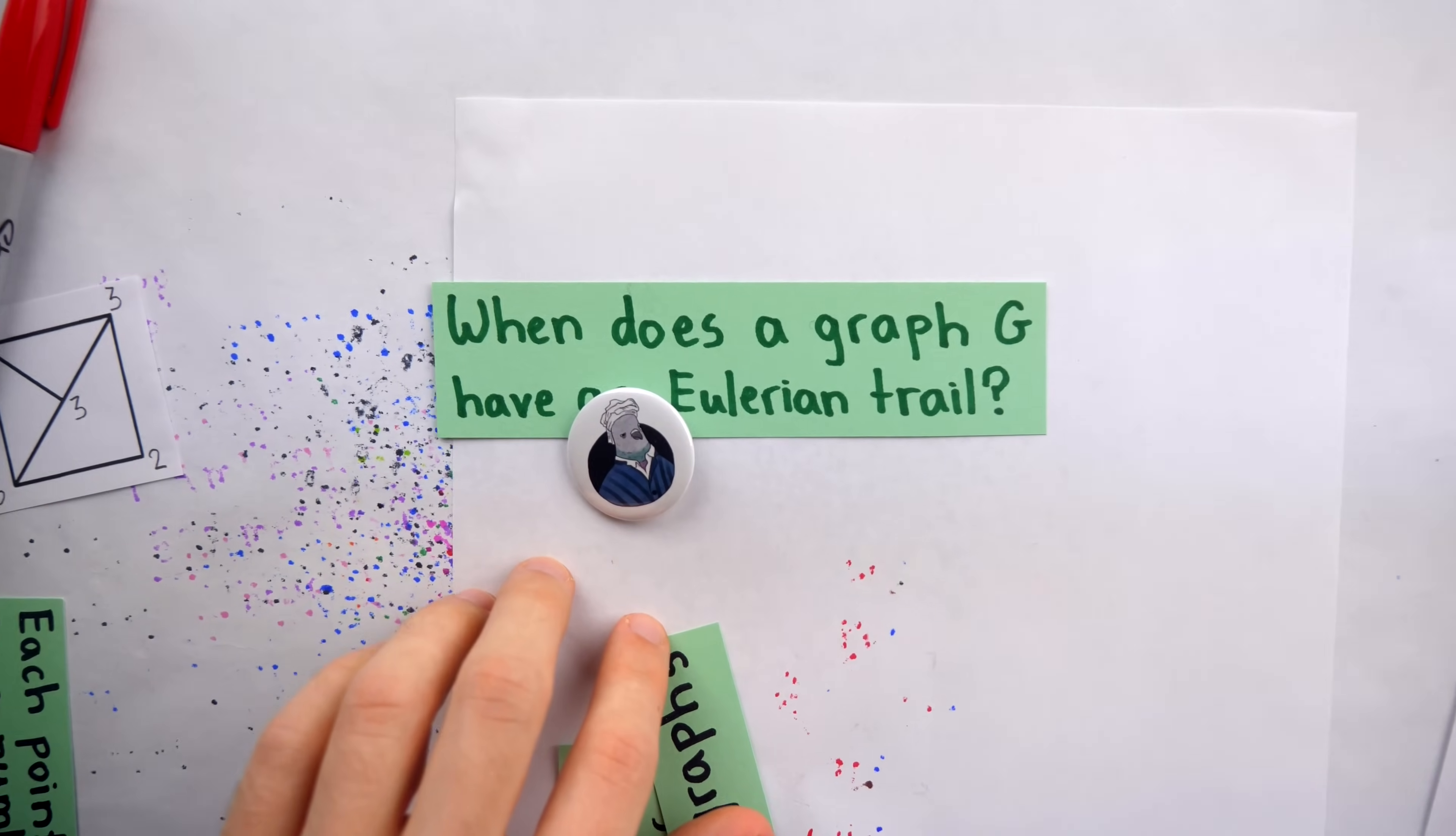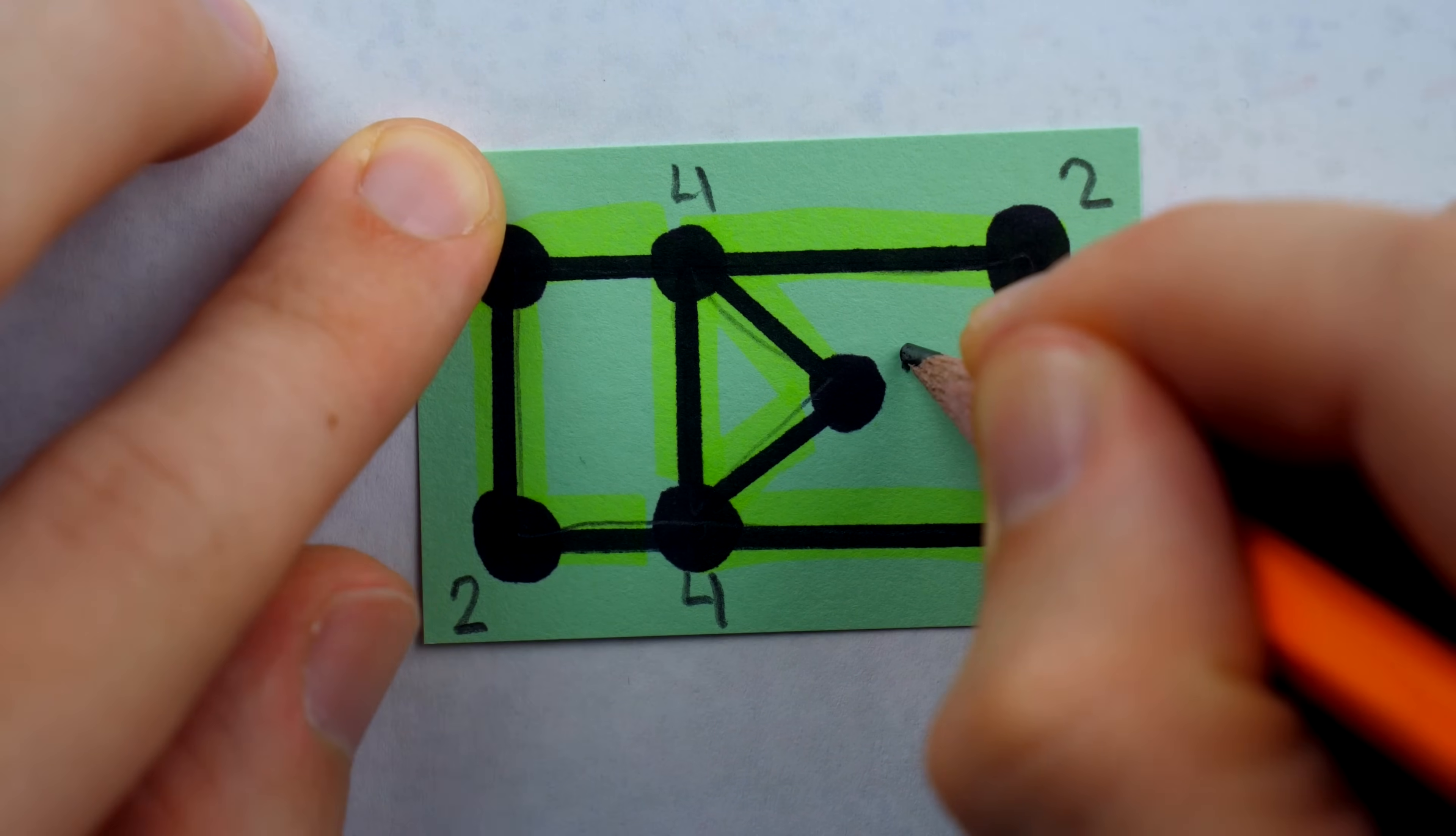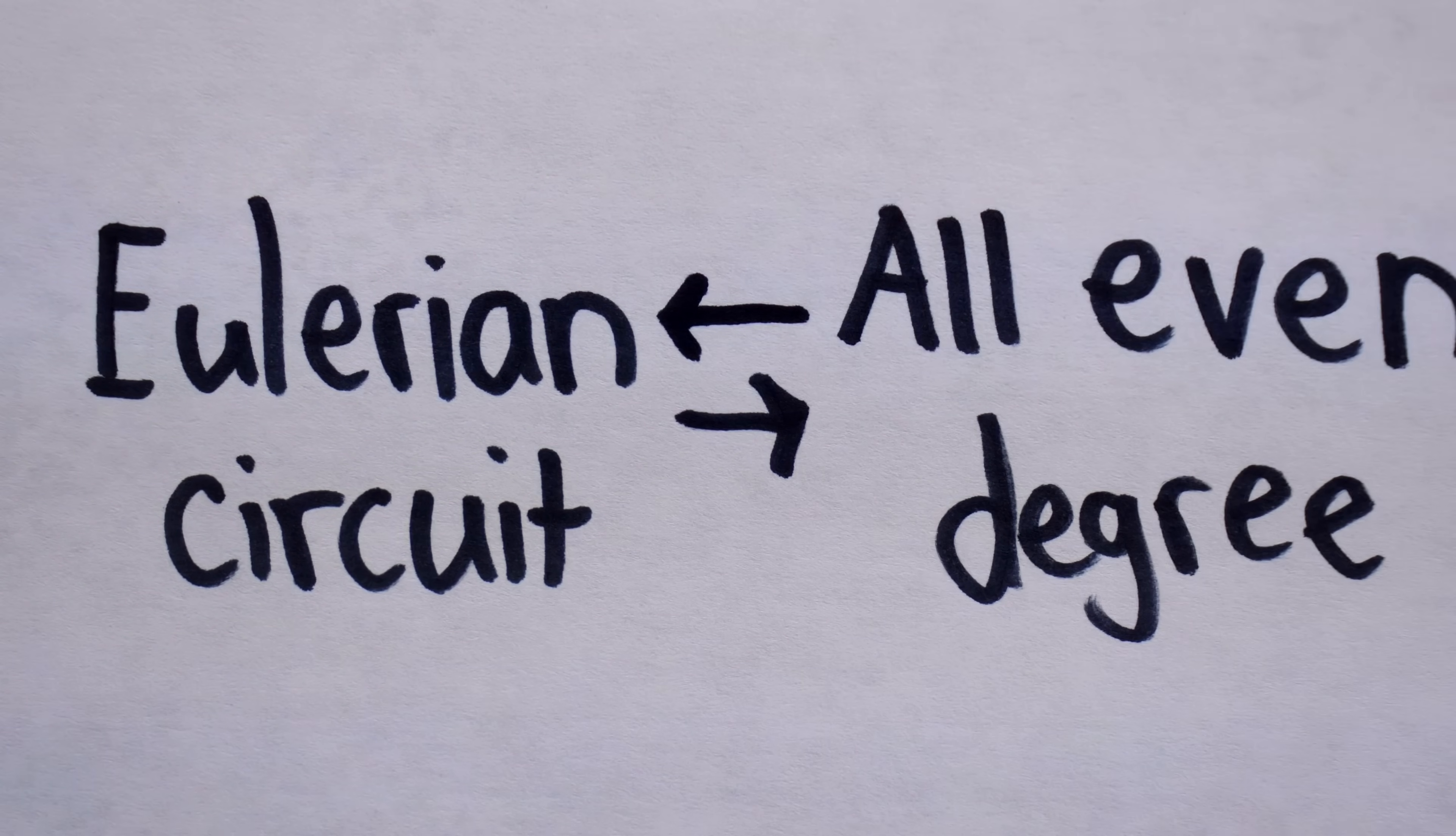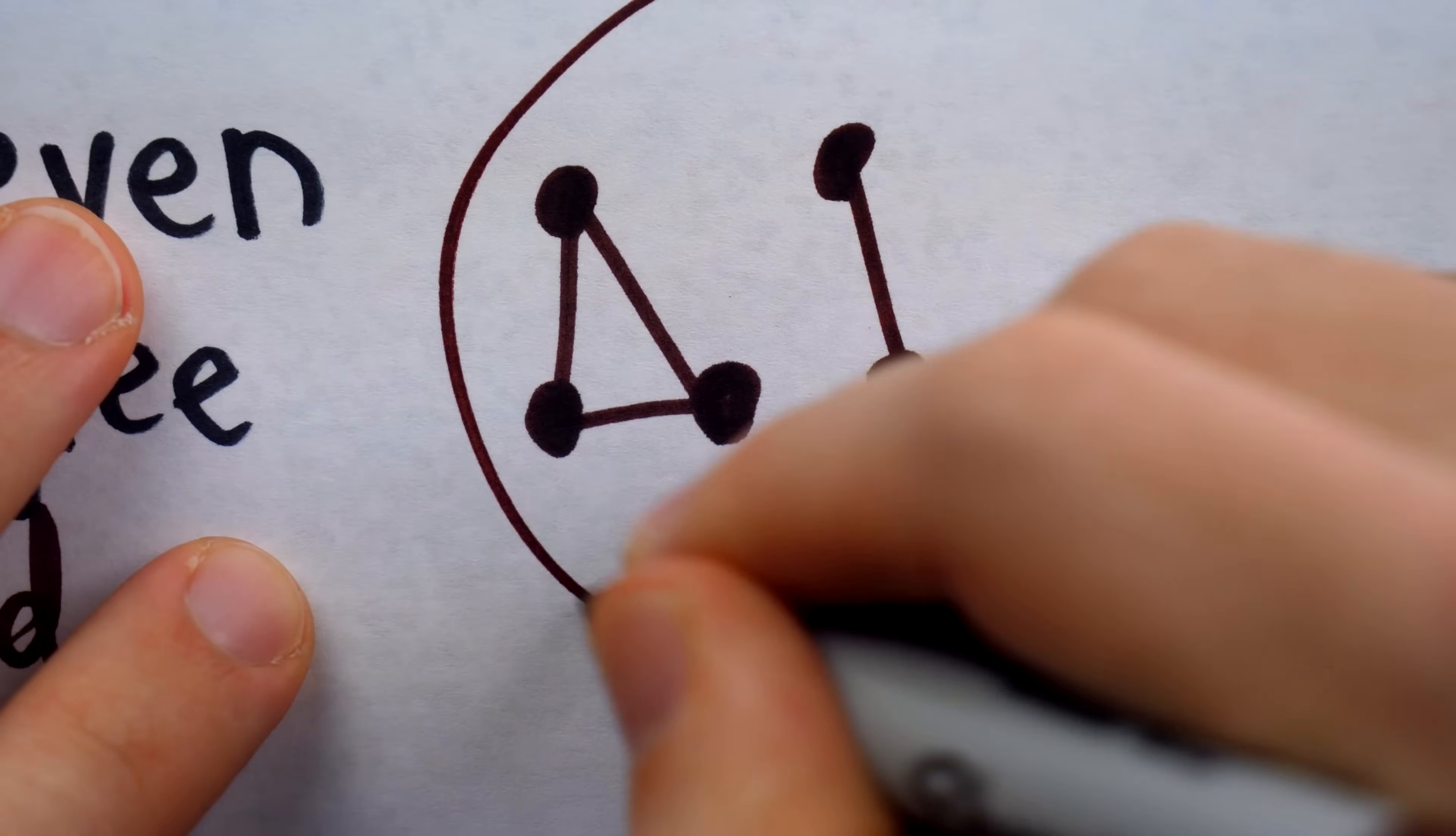The problem Euler solved concerned what are called Eulerian circuits. These are just a special type of the Eulerian trails that we've been discussing. An Eulerian circuit, we saw one earlier, starts and stops at the same vertex. And like we mentioned before, in an Eulerian circuit, no vertices can have an odd degree. They all have to have an even degree. Euler showed that this even degree condition was necessary for an Eulerian circuit to exist. But there was no proof that this condition was also sufficient until Carl Hierholzer gave one in 1873.